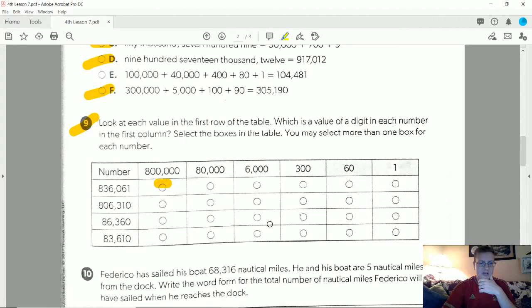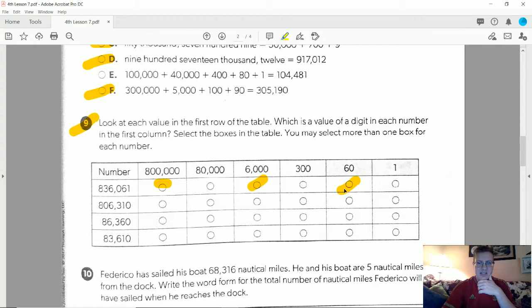The first one, I do have an 8 in the hundred thousands place, so that one is going to be an option. I have a 6 in the thousands place. I don't have a 3 in the hundreds place. I do have a 6 in this tens place, and I do have a 1 in the ones place.